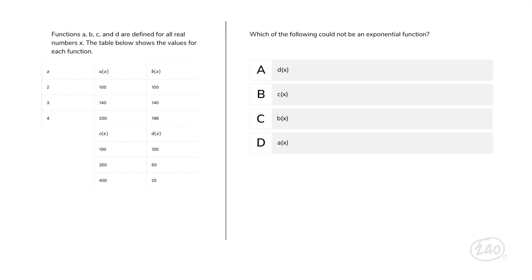Okay, next one. Functions A, B, C, and D are defined for all real numbers x. The table below shows the values for each function. Which of the following could not be an exponential function? You remember that example of $1 in our bank account? With this as a reference, what do three of these answers have that one answer does not? A constant percent of increase or decrease. Therefore, the correct answer is... D.